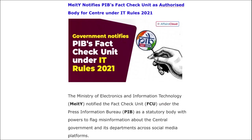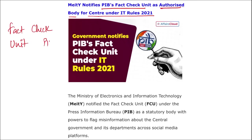Hello everyone. In this video we will be discussing important current affairs for 26th of March. First: MEITY has notified the PIB Fact Check Unit as an authorized body for the central government under IT Rules 2021. The Fact Check Unit of PIB — that is the Press Information Bureau — has been declared as the statutory or authorized body under the IT Rules 2021.